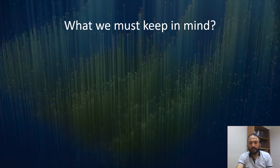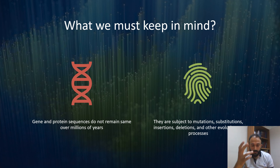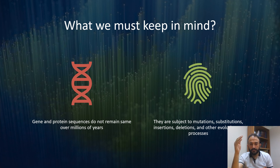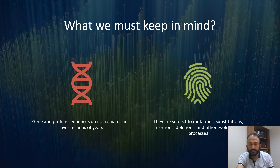What we must keep in mind before going into further detail is that gene and protein sequences do not remain the same over billions of years. During the course of evolution — for example, from fishes to humans, from ancestors to descendants — there are a lot of changes which occur. Nature supports some changes and discards some changes, as we discussed.